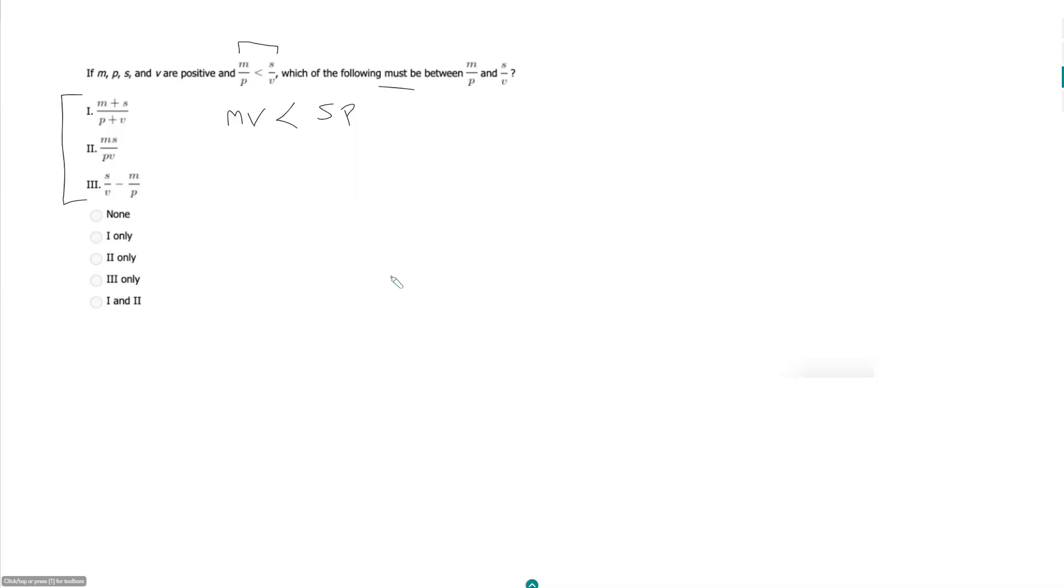So if I can find with the numbers that I test an example that is between m over p and s over v, I can't necessarily say that that choice has to be true. But what I can do is if I can find an example that is not between m over p and s over v, then I can eliminate that option. So that's really what I'm trying to do here, is eliminate things.